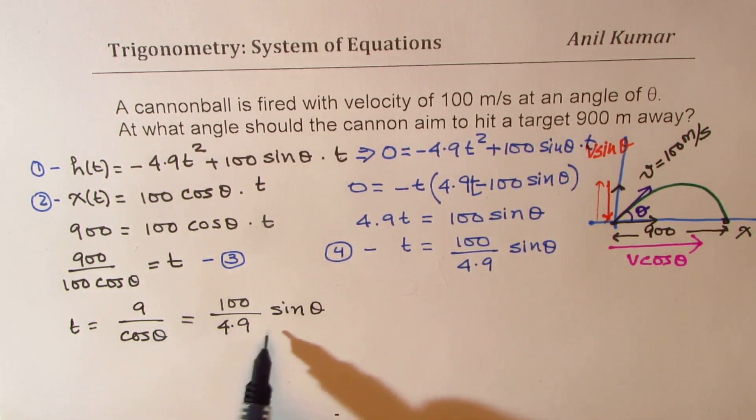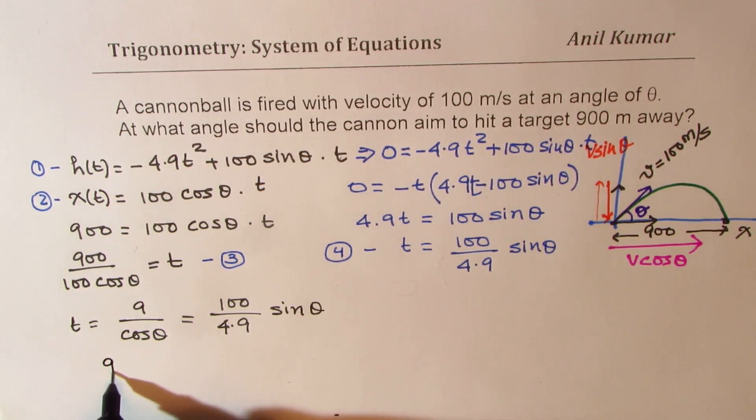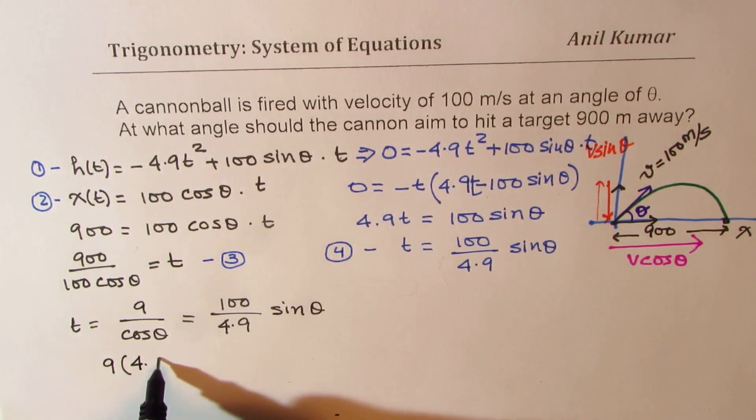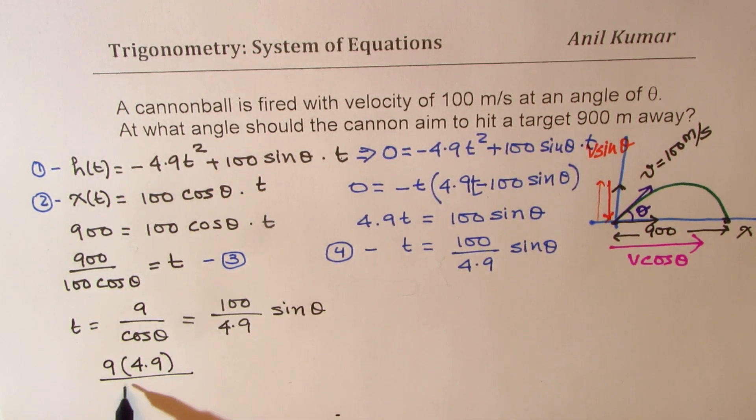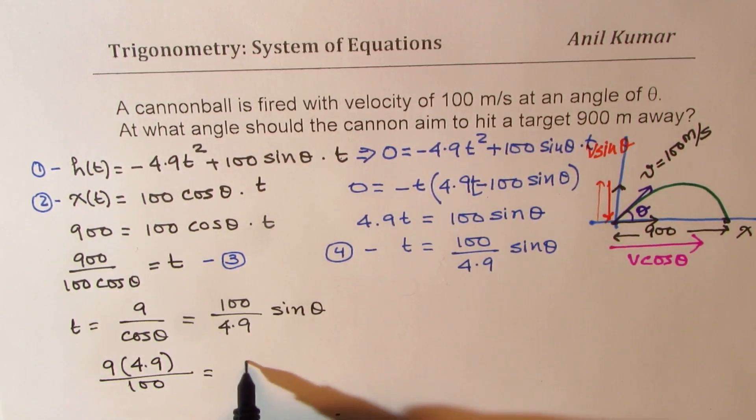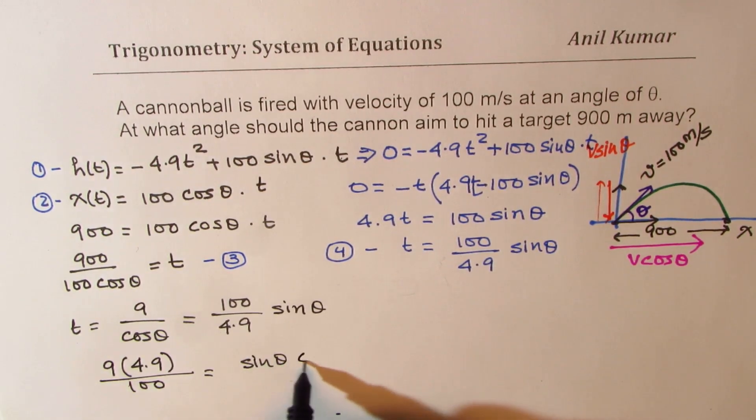Now, we can cross multiply, so we get 9 times 4.9 and then we get here divided by 100 equals to sin theta cos theta, right?